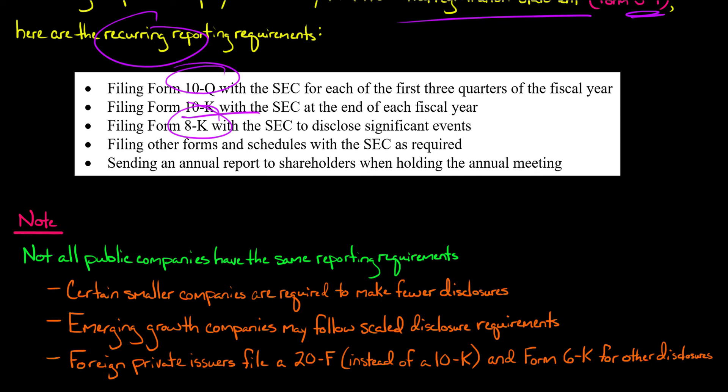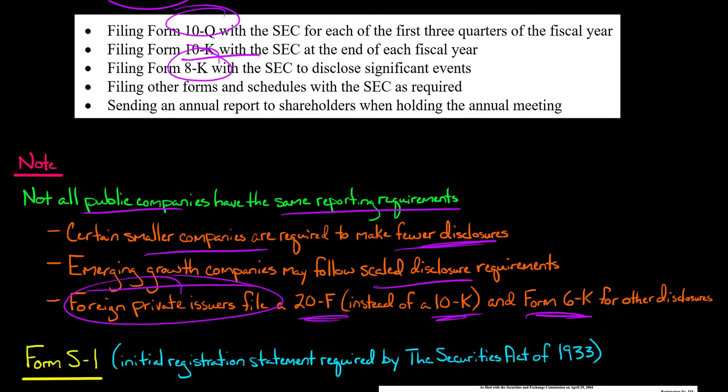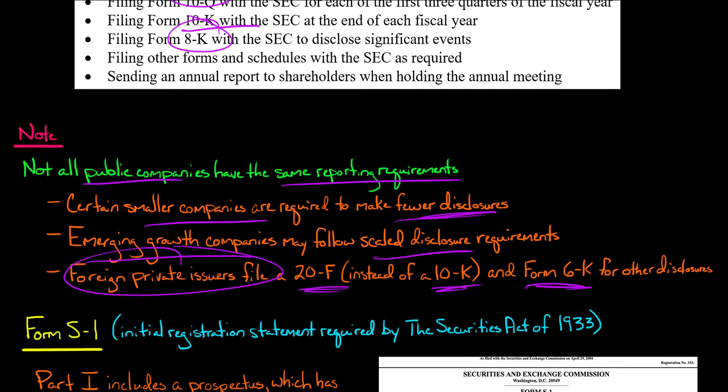But first I want to note that not all public companies have the same reporting requirements. For example, smaller companies in some cases are required to make fewer disclosures. Also, emerging growth companies may in some cases follow scaled disclosure requirements. Also, foreign private issuers will file a 20-F instead of a 10-K and they'll also file Form 6-K for other types of disclosures.